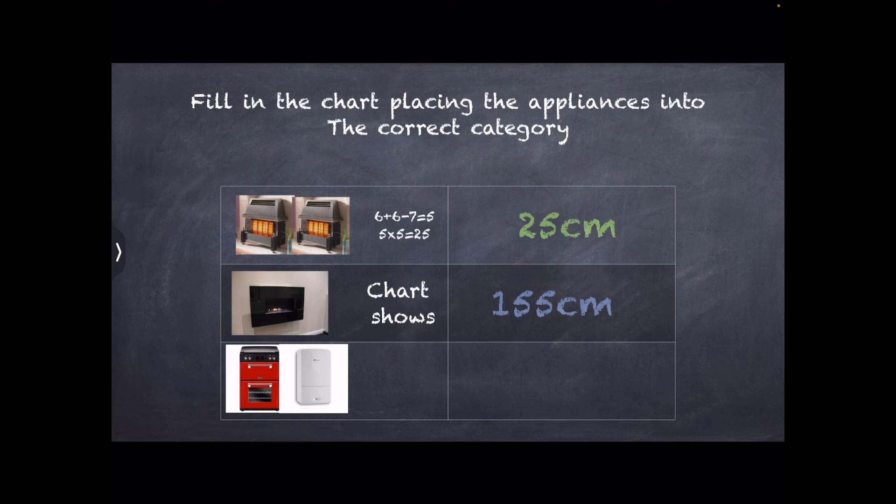Again, with the cooker, it's a flueless appliance. You go and look at your flueless chart. And it will tell you that a cooker in a 30 meter squared room requires no ventilation. The boiler, being room sealed, also requires no ventilation. So if you add these two up, zero and zero, it equals zero.